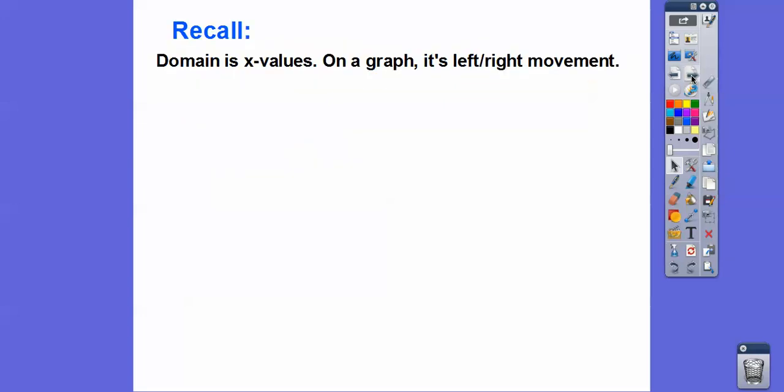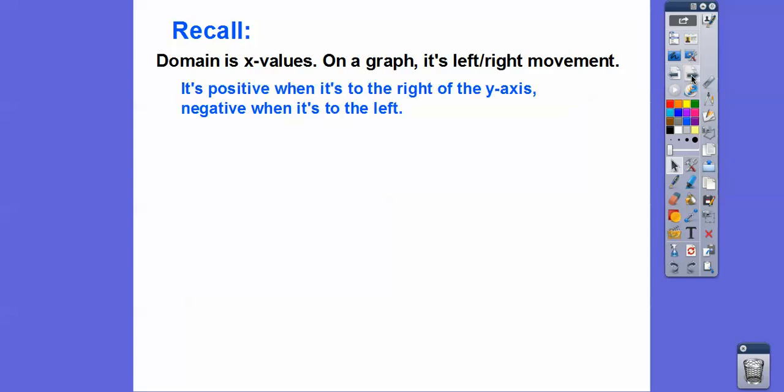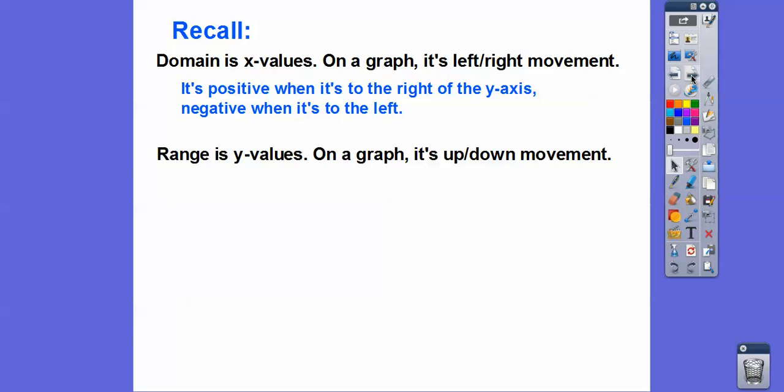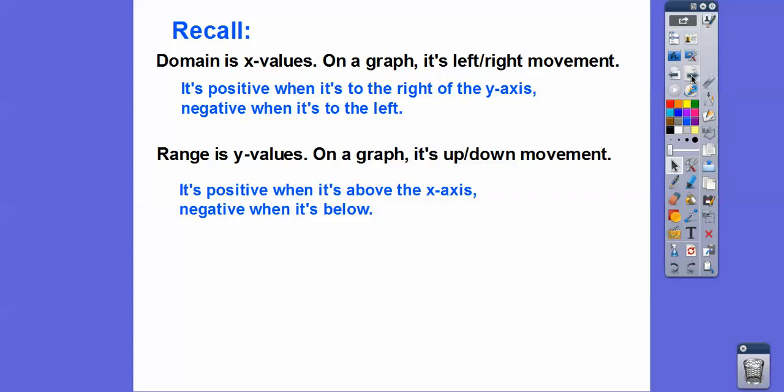Remember, domain is all X value stuff. So on a graph, it's all left and right movement. When it's to the right of the Y axis it's positive; when it's to the left, it's negative. And range values are up and down movement — it's Y stuff. When it's above the X axis it's positive, and when it's below, it's negative.